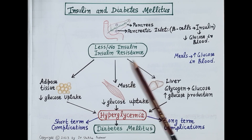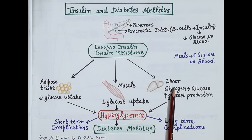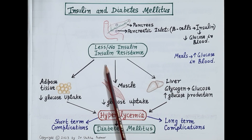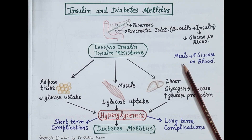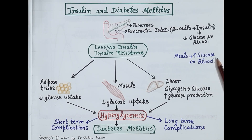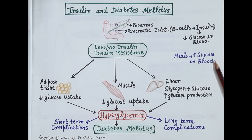Due to insulin resistance, cells of adipose tissue, muscles, and liver progressively stop responding to insulin. So insulin resistance is lack of insulin action. After a meal, concentration of glucose increases in the blood, and in the presence of insulin, this glucose is taken up by body cells to produce energy.